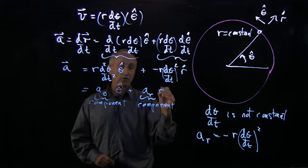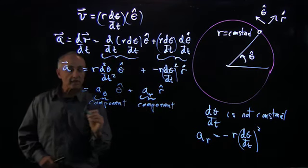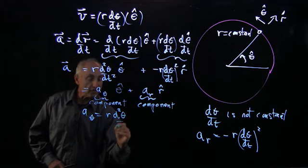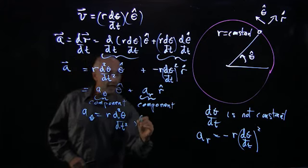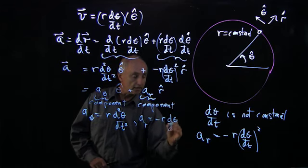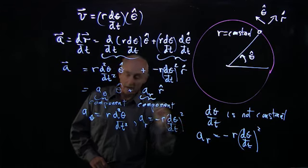And because this is a vector, r hat. Where the a_θ is now the second derivative of d²θ/dt². And just to remind you that a_r is minus r (dθ/dt) squared.